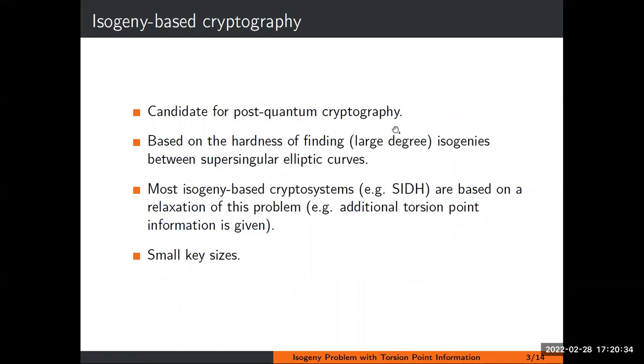Isogeny-based crypto is a branch of post-quantum crypto based on the hardness of finding isogenies between supersingular elliptic curves. However, in most cases, isogeny-based systems are based on relaxations of this problem. For example, in SIDH, additional torsion point information is provided. Isogeny-based systems have the nice feature of small key sizes, so their public keys, ciphertexts, and signatures are all small compared to their post-quantum alternatives.